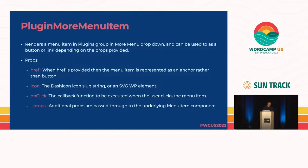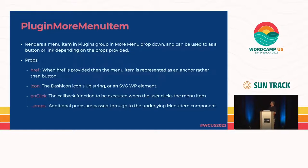Next is PluginMoreMenuItem. This renders a menu item in the plugins group in the more menu dropdown — that three-dot button dropdown. It can be used as a button or a link depending on props passed. It accepts an href prop — when used, it renders as an anchor instead of a button. It supports an icon and an onClick function. It will also pass any additional props through to the underlying component.